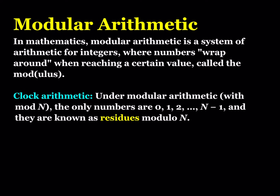Modular arithmetic is a system of arithmetic for integers where numbers wrap around a certain value, which is called the modulus. You can also define it as clock arithmetic if you think about the 12-hour or the 24-hour clock. Numbers wrap around and when you go to higher numbers, they're always going to repeat. These numbers are known as the residues modulo n.